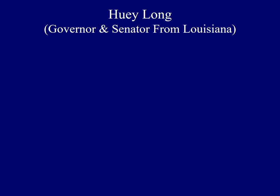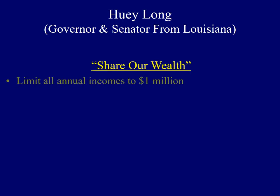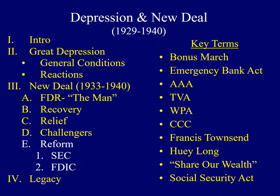Huey Long was from Louisiana and had his own plan called Share Our Wealth, designed to address the gap between the very rich and poor. He wanted to limit all annual incomes to $1 million a year and limit personal fortunes to $5 million. With that money, he would guarantee all American families a homestead of $5,000 and an annual income of $2,500. Congress didn't adopt the programs advocated by either Townsend or Long. However, when we look at the last R — reform measures — we'll see some of the influence of these challengers.